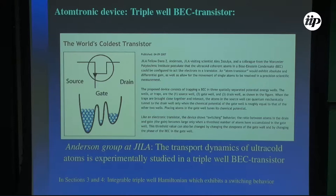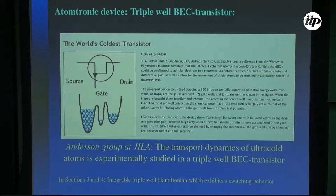Another experiment was the construction of a triple-well BEC transistor by the group of Dana Anderson. They proposed a device that consists of trapping a BEC in three spatially separated wells — the source well, the gate well, and the drain well — and showed that under certain conditions the atoms in the source can quantum mechanically tunnel to the drain via the gate. Transport dynamics of ultra-cold atoms was experimentally studied in a triple-well BEC transistor, and like an electronic transistor, this device shows a switching behavior. In sections three and four, we will discuss an integrable triple-well that also exhibits switching behavior.